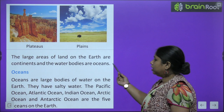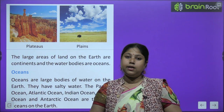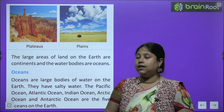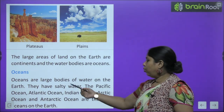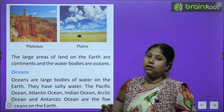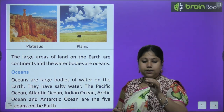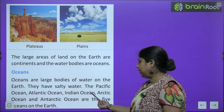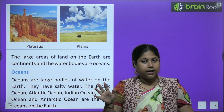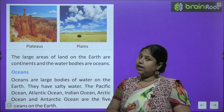The large areas of land on earth are continents and water bodies are called oceans — jo bade-bade areas hain, land masses jo hain, unko hum bolenge continents. Aur baaki ke jo samudri area hai, jo paani se ghira hua hai, woh hai oceans. Oceans are large bodies of water on earth — yaani paani ka bahut sara amount, jahaan jahaan pe ikhatta hua hai, wahan pe samundar ban gaya hai, inhein hum ocean bolte hain. These oceans have salty water — inmein jo hai paani khara hota hai, yaani is paani mein namak hota hai. The Pacific Ocean, Atlantic Ocean, Indian Ocean, Arctic Ocean and Antarctic Ocean are the five oceans of earth — earth pe paanch oceans hain.